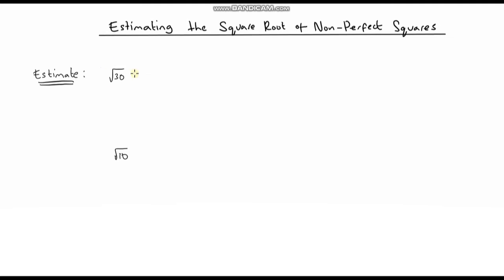So the square root of 30 — I would not be able to work that out pen and paper, and even using a calculator it doesn't give an exact value because the square root of 30 is an irrational number; a decimal that just keeps going on forever. To estimate it, I think about the perfect squares close to 30. The square root of 25 is 5, and the next square number is 36, so the square root of 36 is 6. So the square root of 30 will be between 5 and 6.